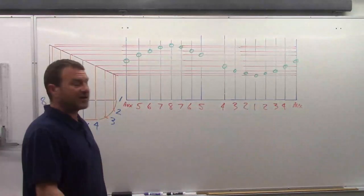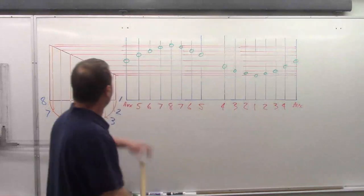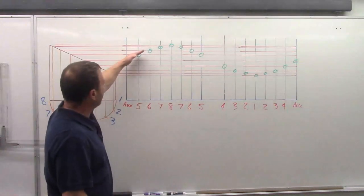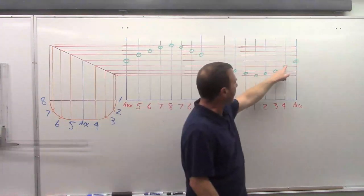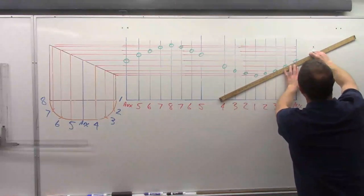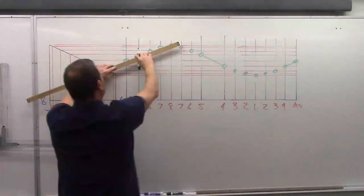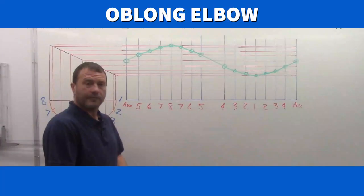There we go. So you see, it's a similar fish pattern. But in this case, we have a real straight line here. And then our curve comes in. And then straight again. Curve comes in. Straight. So let's draw in those straights anyways. Oblong elbow. Thanks.